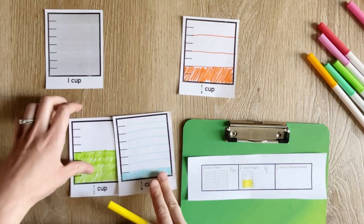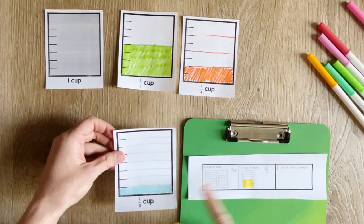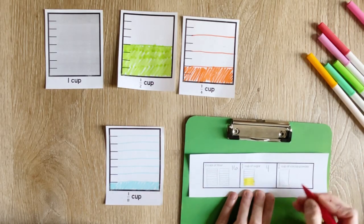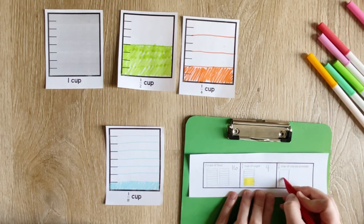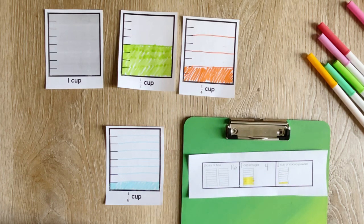And then the last one here, to get one-eighth cup of cocoa powder, how many times should we fill up our one-eighth cup? I'll draw the visual here to show what we're thinking again. It's going to take one of our one-eighth cups to get one-eighth a cup of cocoa.